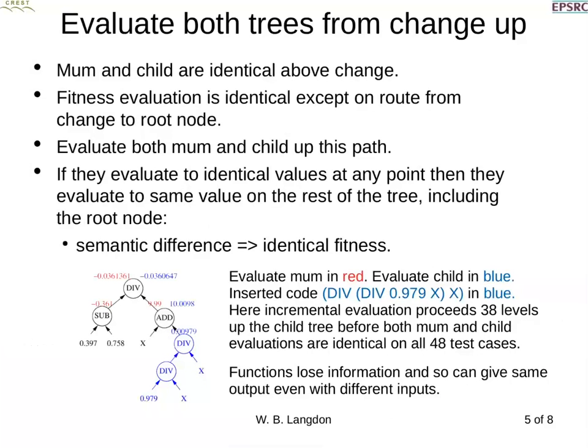The trees are identical apart from the change, so the fitness evaluation will be identical except on the path from the change to the root node. We compare the parent and the child all the way along this route. The key point is: if at any point on a test case the parent and child are identical, they'll remain identical for the rest of the route to the root node. So we can have a semantic difference between the parent and child and still get identical fitness.